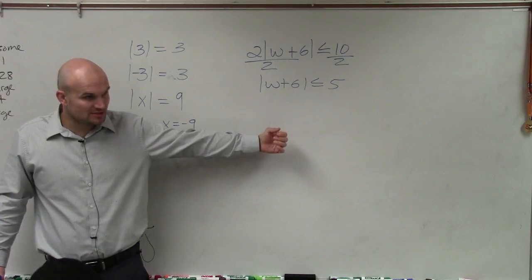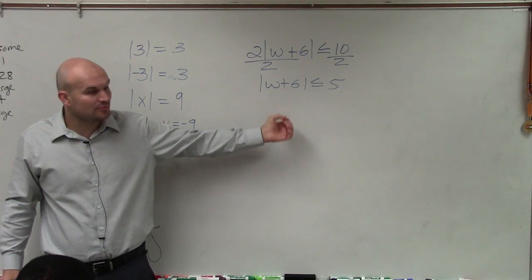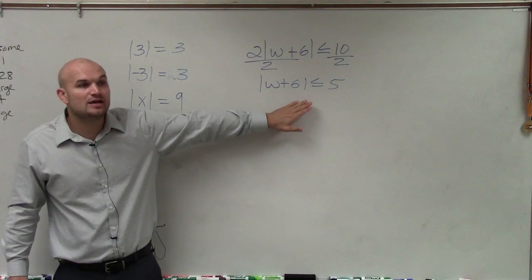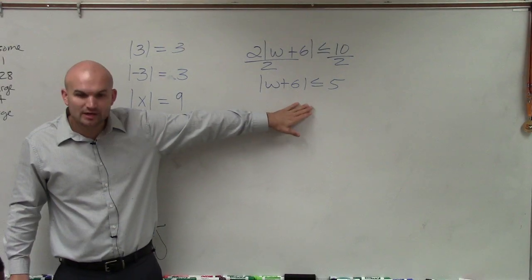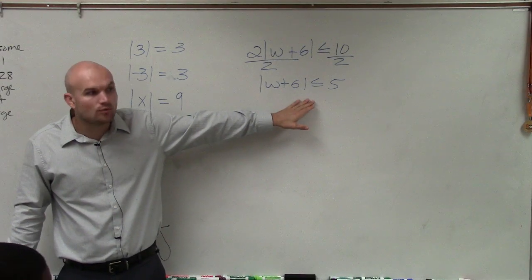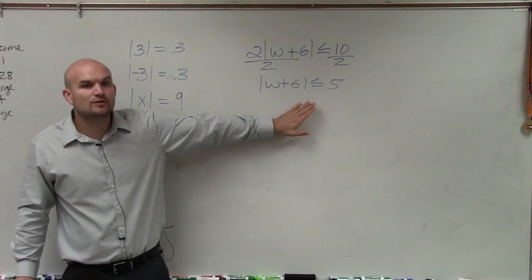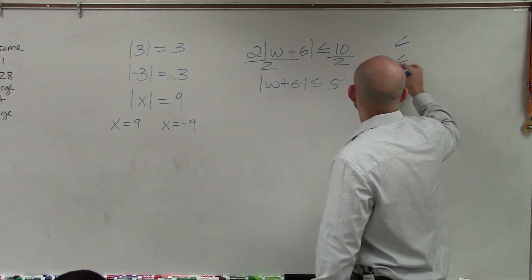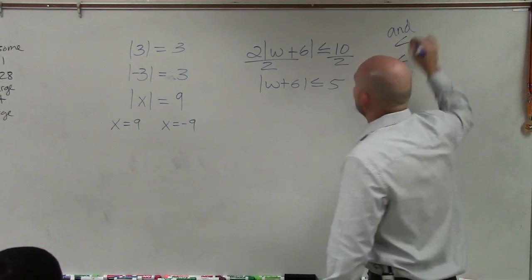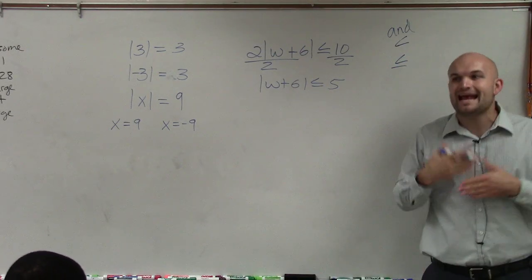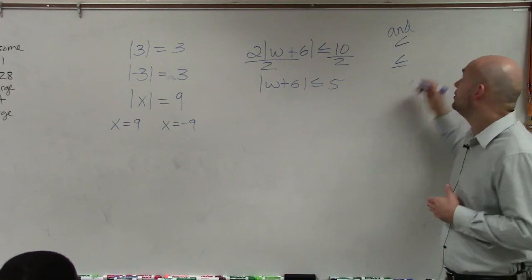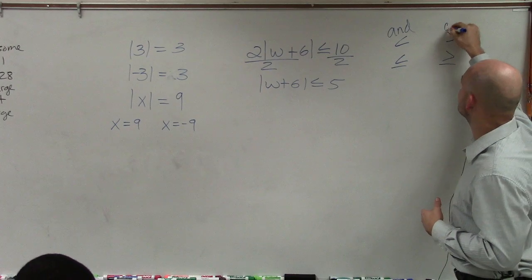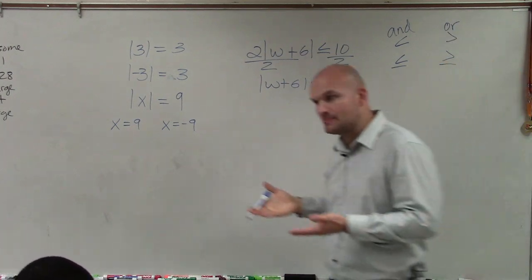Now here's where kind of notes and taking and writing this down is going to become very important. For instance, this is not an absolute value equation. This is an absolute value inequality. So when you create your two absolute value inequalities, what you're going to do is you're going to create a compound inequality. So any time you have a less than or a less than or equal to, you're creating a compound inequality that is an and compound inequality. Whenever you have an absolute value inequality and it's greater than or greater than or equal to, you're creating an or compound inequality.